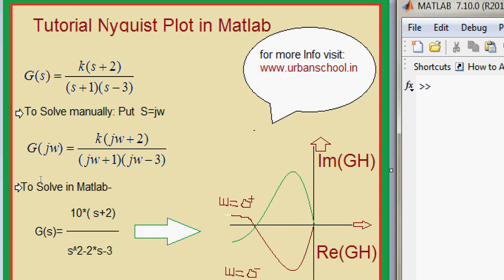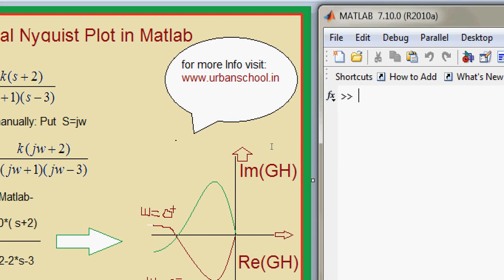Now I have solved here. This is G(s) equals to 10(s+2) upon s²-2s-3. Now this function is ready to be drawn in MATLAB, so let's switch over to MATLAB.